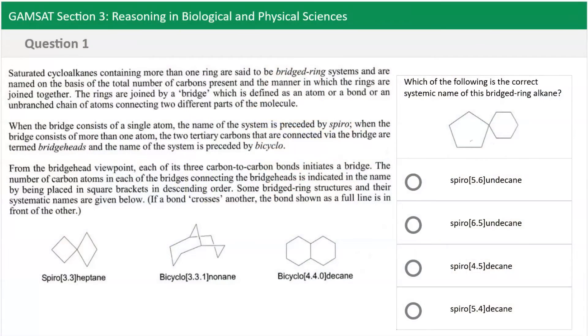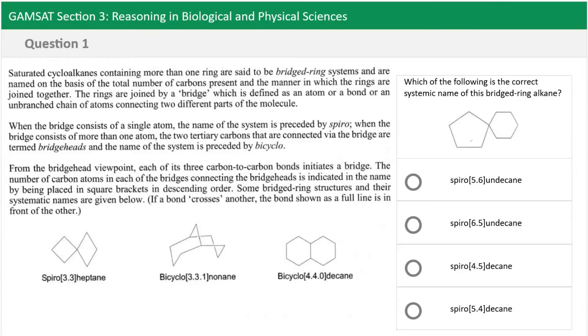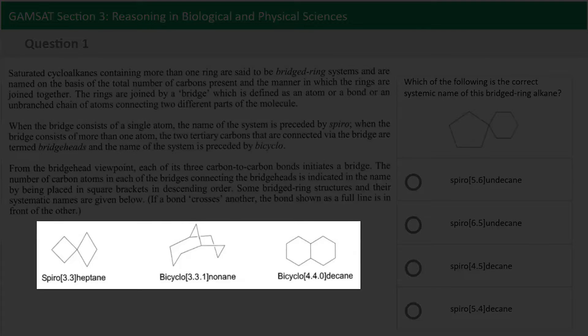Now one way that someone might go about this is to go to the stimulus, read the text, and find out exactly how you would name it. You could assume that the rules are probably laid out there for you. But a quicker way might be to recognize the fact that some examples have already been provided.